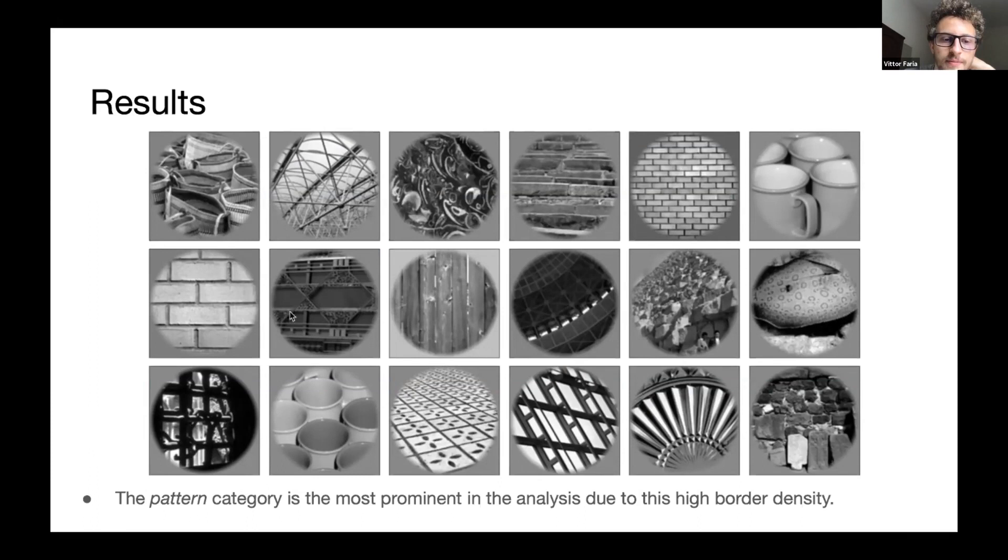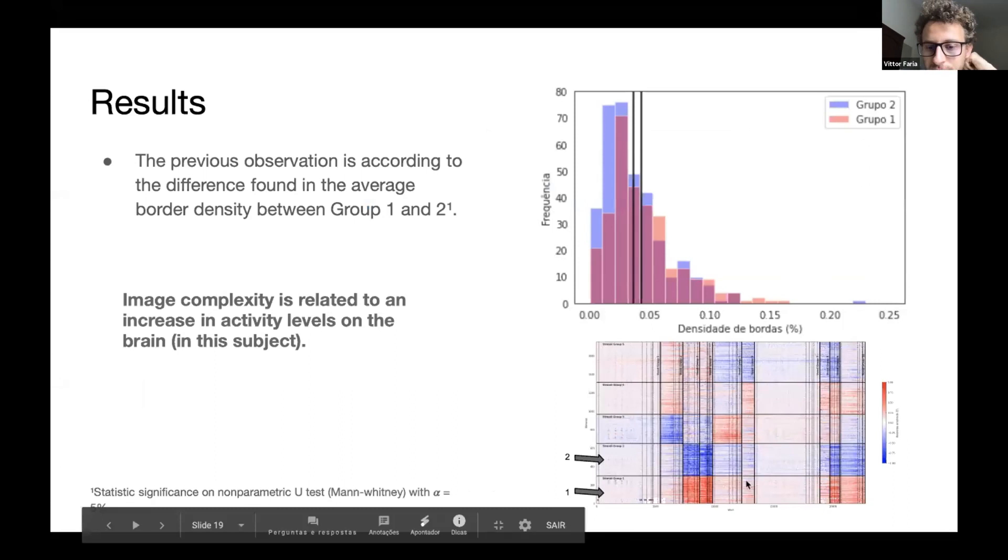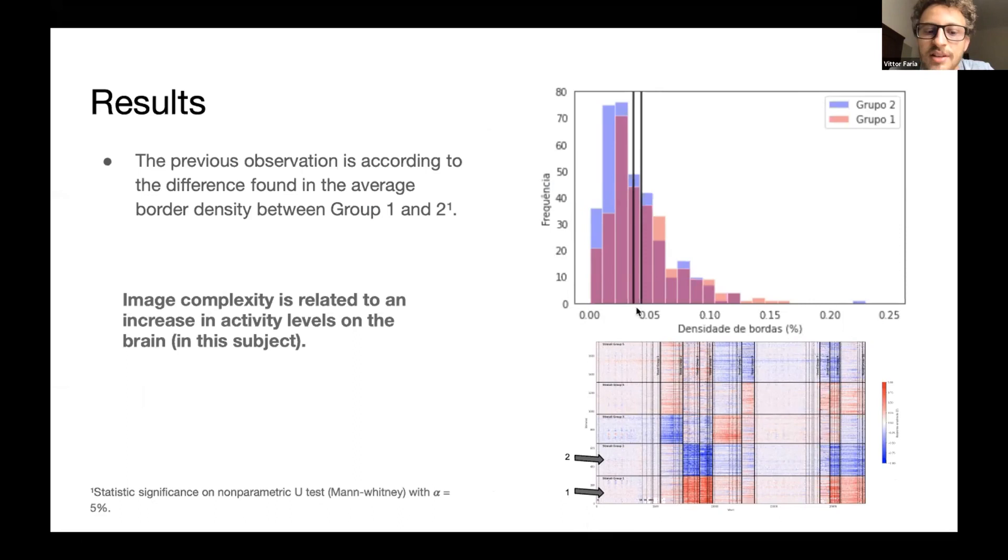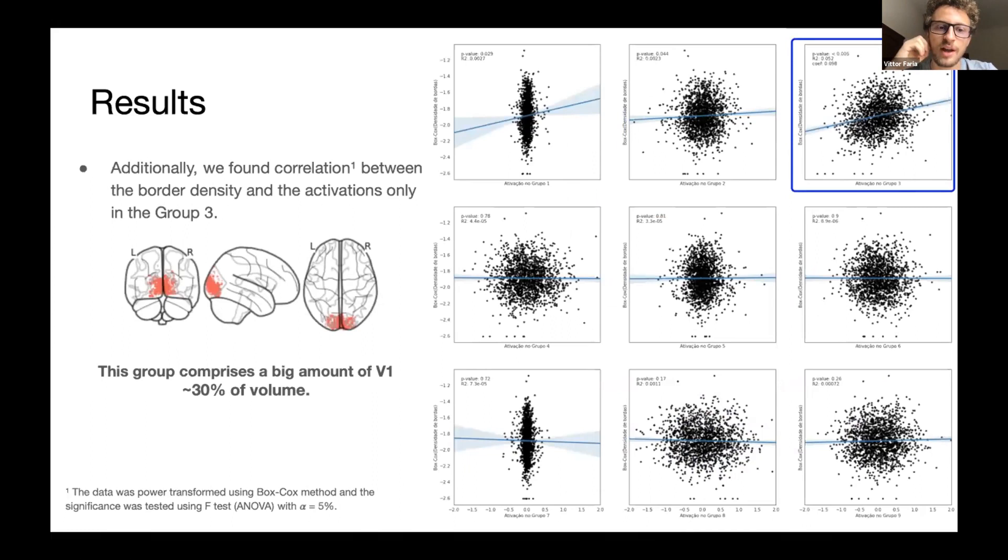Here are some examples of this pattern category, which has many borders and many details. So these are very complex images according to this metric. And we made a comparison between two image groups. The one which has the pattern category, this one in red and another that has not many pattern category and has a negative activation all over the image. And we saw a little, but statistically significant, mean difference on the border density. And we can, from this, say that the image complexity is related to an increased activity level all over the visual cortex for this subject.